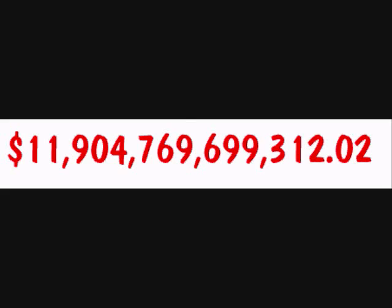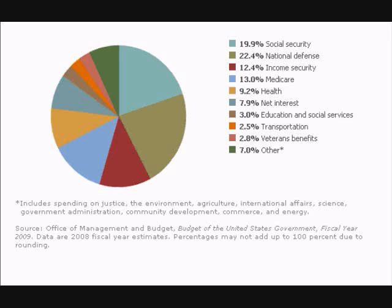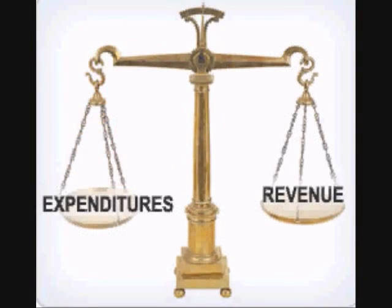That's a huge amount of money. Each year, a significant portion of our tax money goes to pay the interest on the national debt. Our government spends more money than almost every other entire country except Japan, Germany, and China. It is for this reason that most economists recommend that the government balance the budget — in other words, the government only spends as much as it makes from taxes and other revenue.